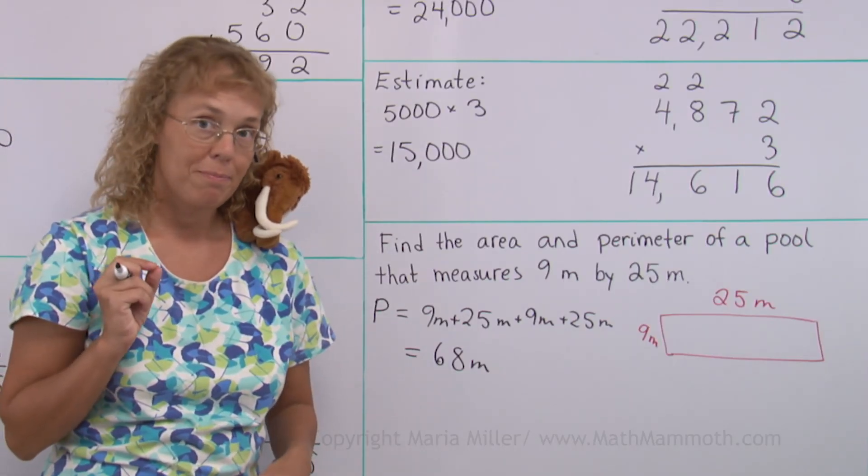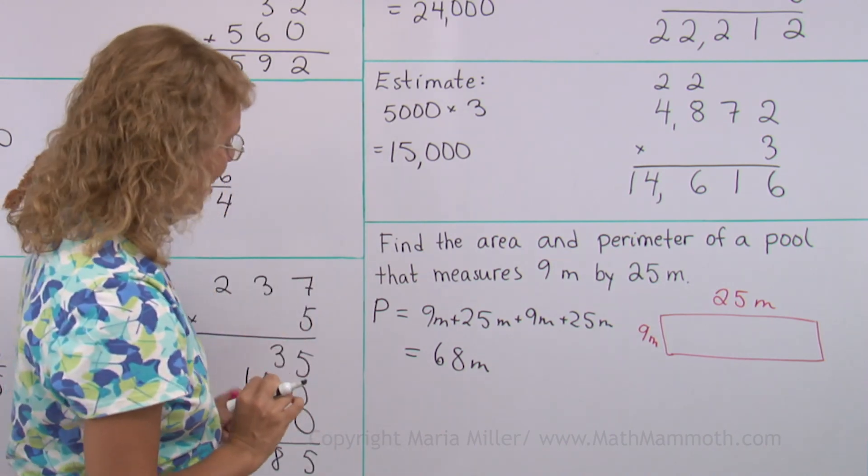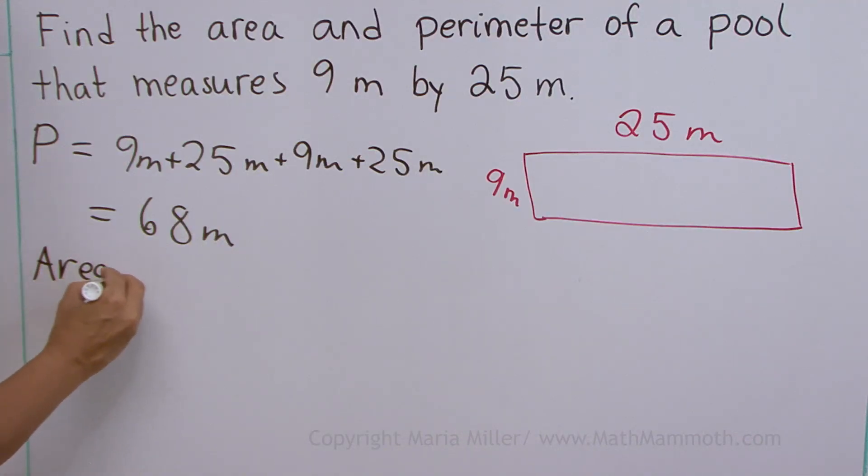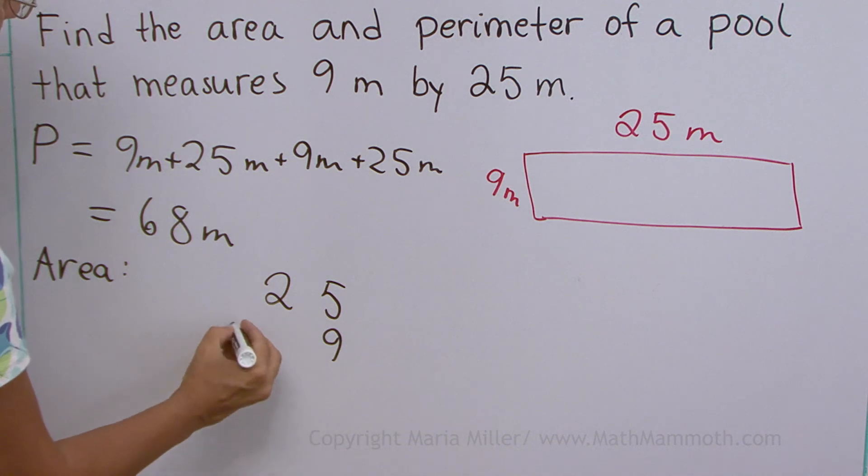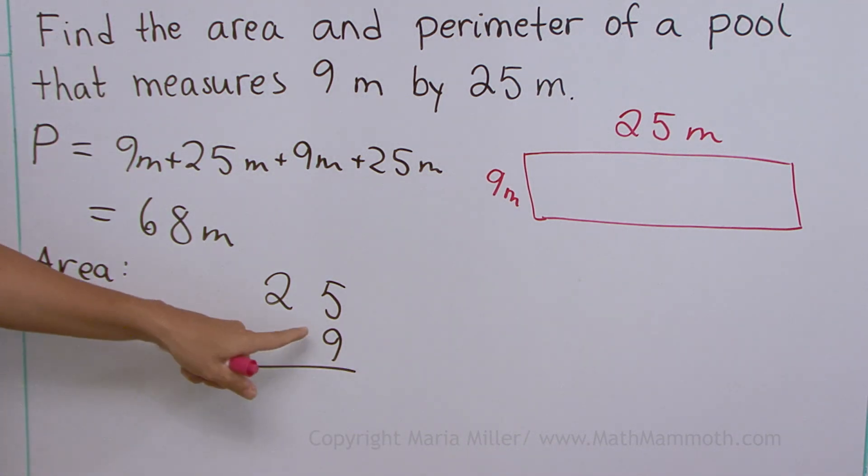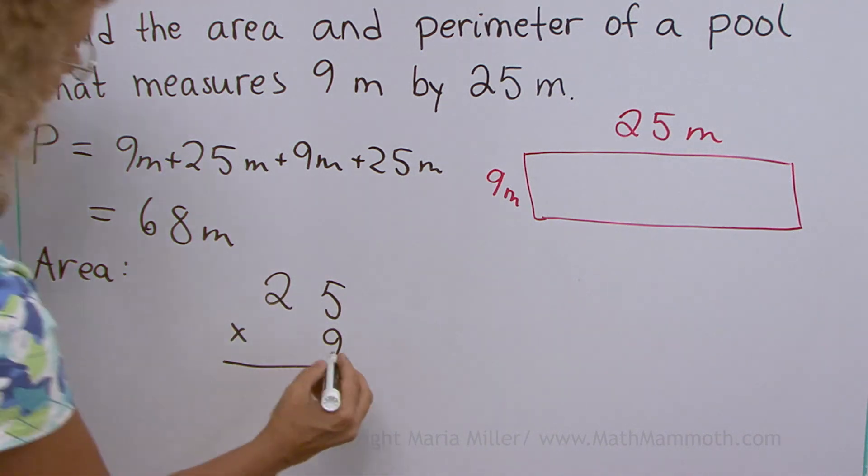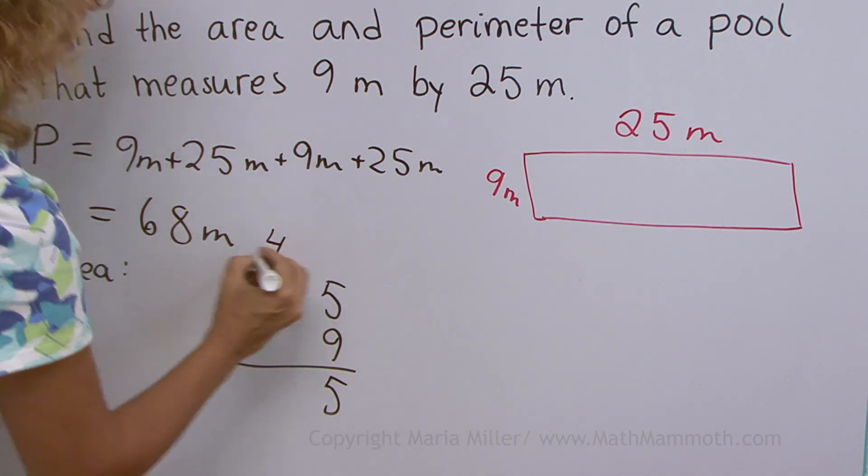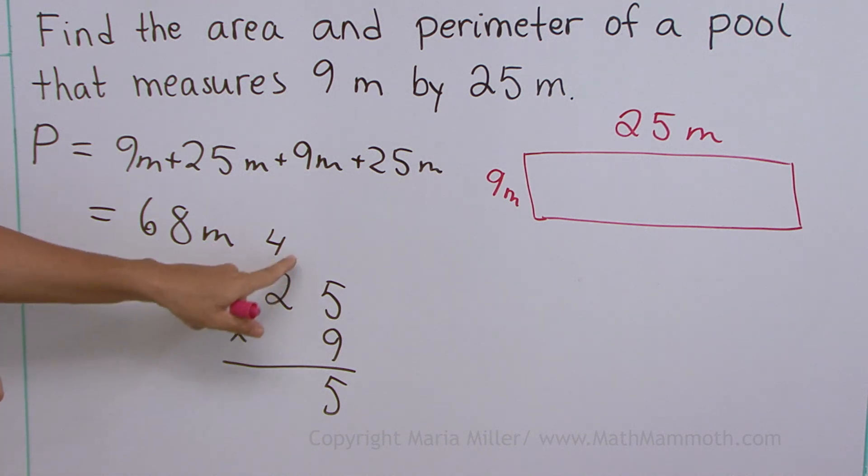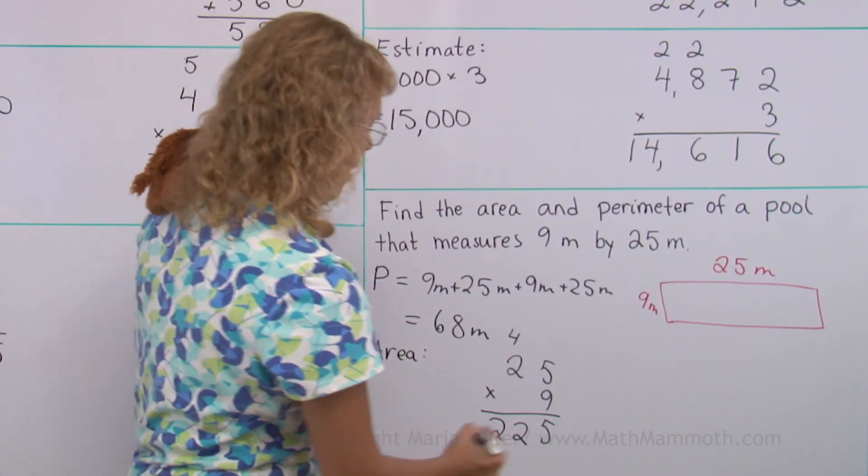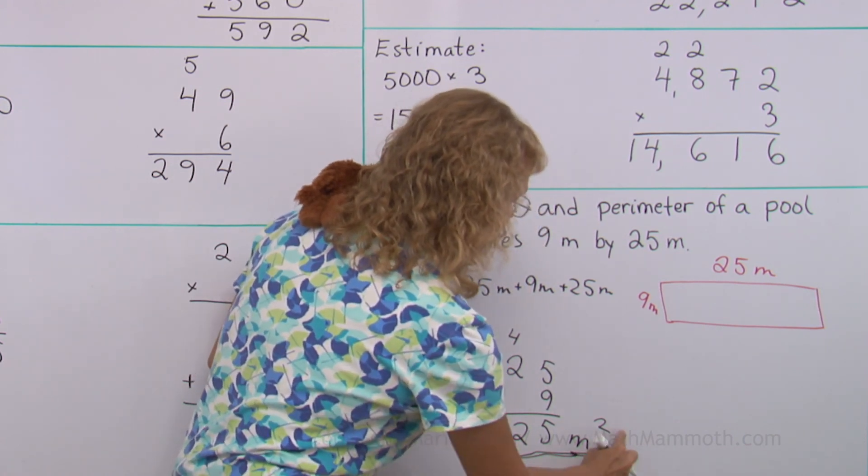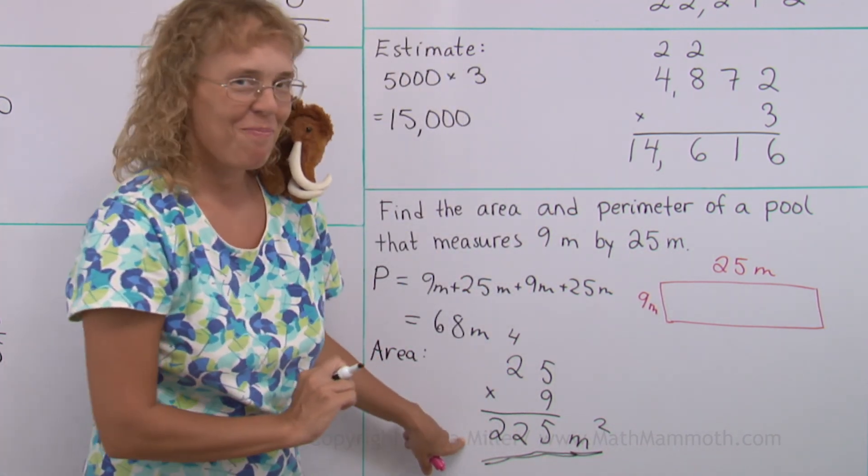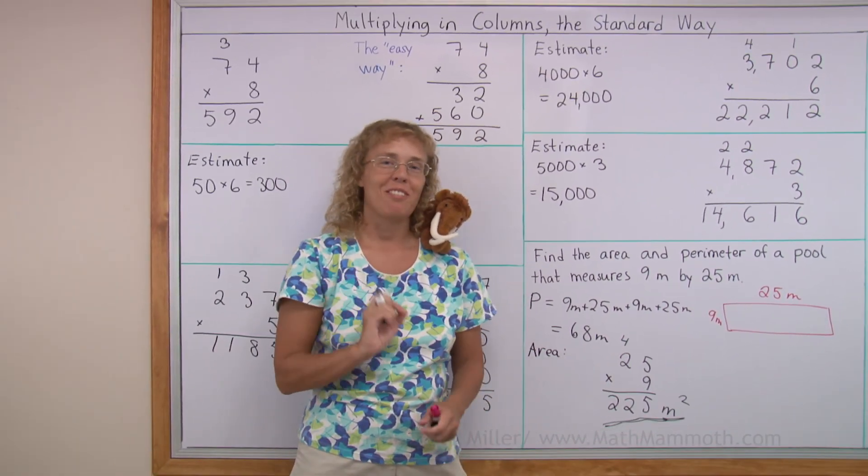Then the area. For area, you multiply the side lengths. So 9 times 25 and we can now use our skill of multiplying like that in columns. 9 times 5, 45. I hope you did it too. 9 times 2 plus 4, 18 plus 4, 22. So the area is 225 and the unit here too. We need to always remember the square meters, not just leave it as a plain number. I hope this was an easy lesson. We are all done with it.